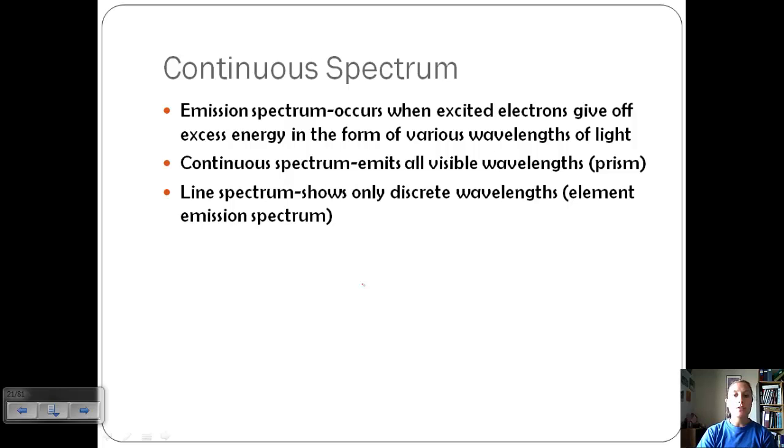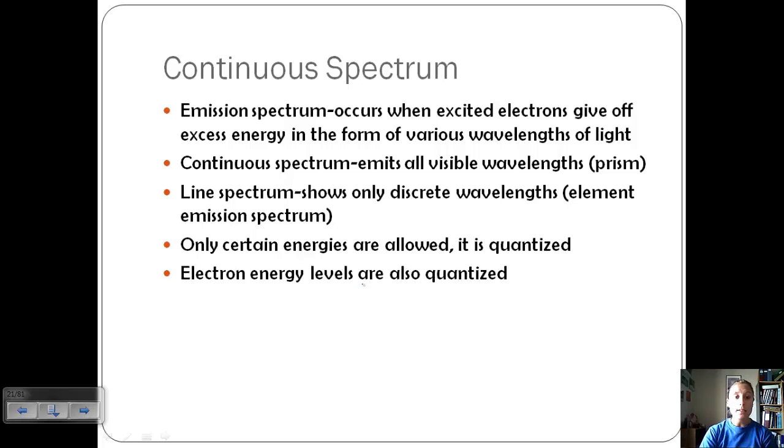Line spectrum shows only discrete wavelengths. This would be an emission spectrum because those excited electrons are giving off a certain amount of energy and we see certain wavelengths of light. Because we see this line spectrum, this means that certain energies are allowed and so we say that's quantized. So it's very specific wavelengths of light. Think of it like a staircase. You can't be in the middle of the step. You have to be on one step or the next one, and so that's being quantized.